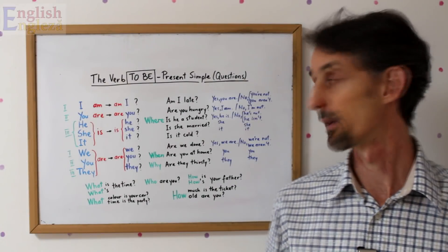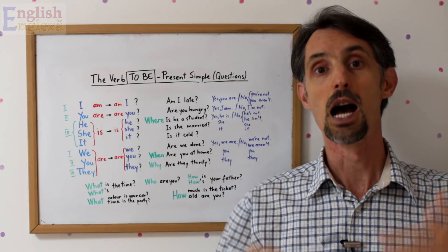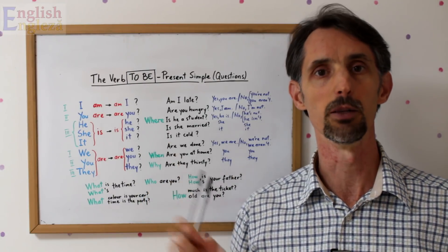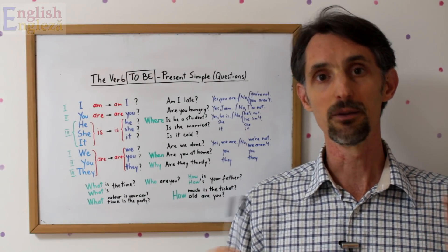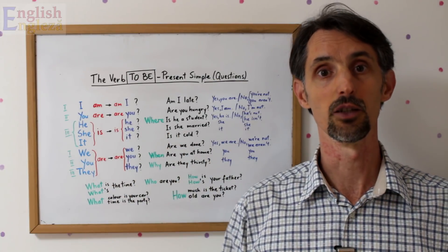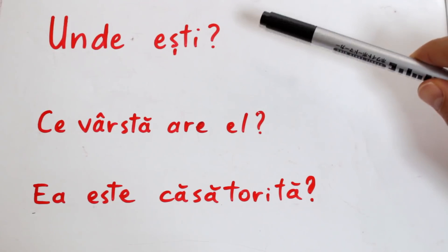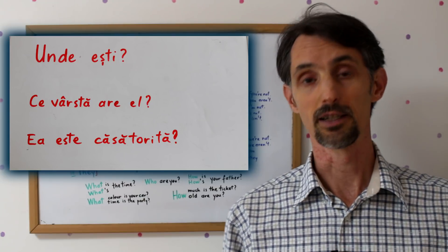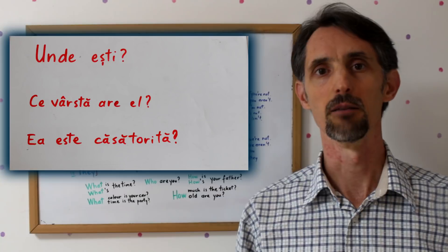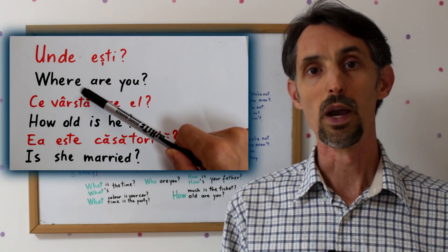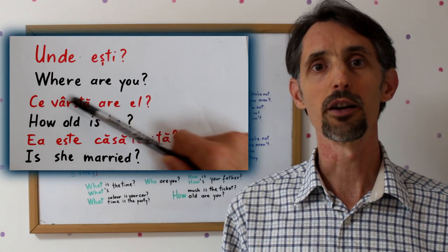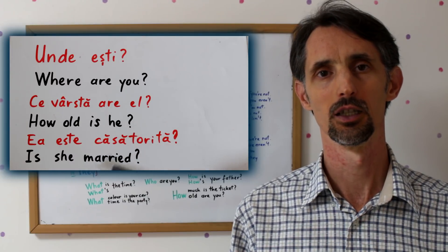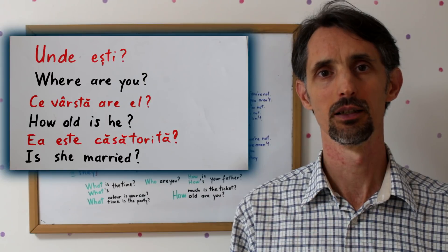Să recapitulăm. În această lecție video am vorbit despre verbul to be, a fi, la formele sale interrogative. Am formulat întrebări cu acest verb, am văzut cum putem răspunde scurt, și am folosit WH questions pentru a formula întrebări deschise. Vă invit să apăsați butonul de pauză și să exprimați: Unde ești? Ce vârstă are el? Ea este căsătorită? Variantele corecte sunt: Where are you? How old is he? Is she married?